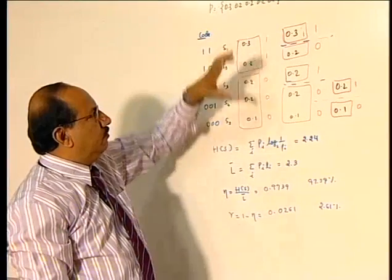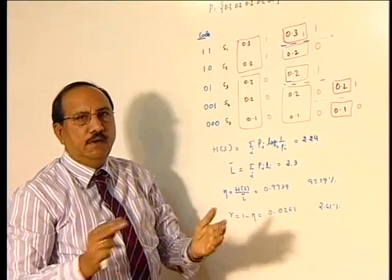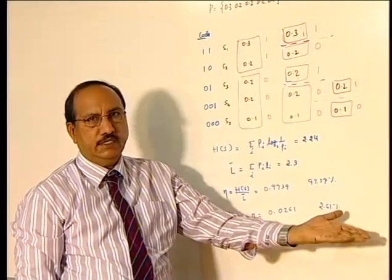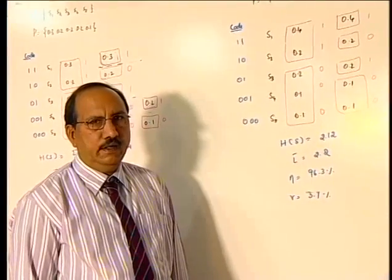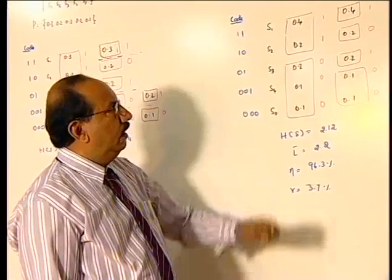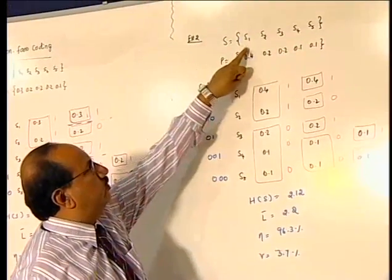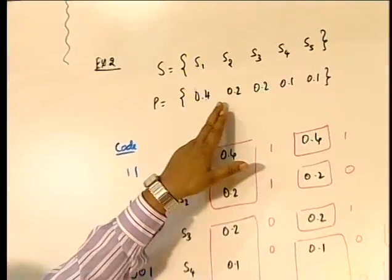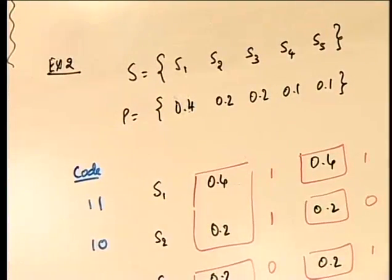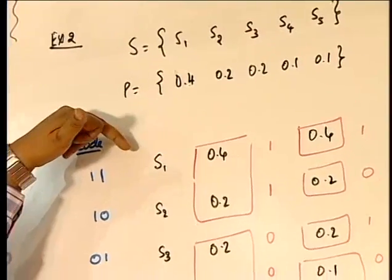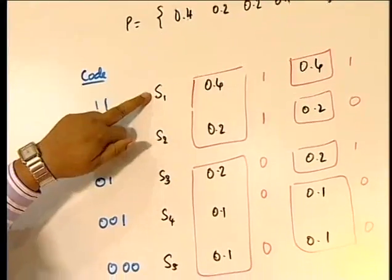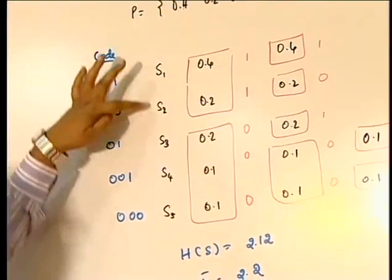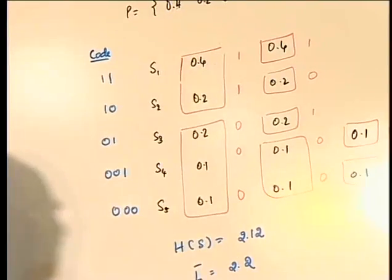Here what will happen, somehow I could be able to assign a codeword by making two halves with equal probability, but there are certain cases which I will explain in the next example. Now I will take the second example. In the second example I will have a source S1, S2, S3, S4, S5 with the probabilities in decreasing probability. So as per the algorithm now I am going to assign a codeword for these things, but first I will write S1, S2, S3, S4, S5 in the order of decreasing probability.